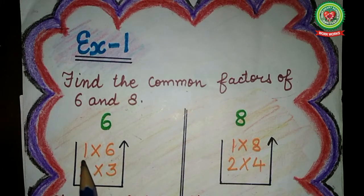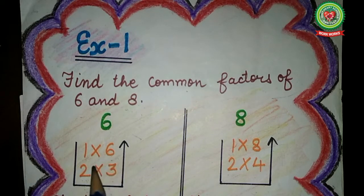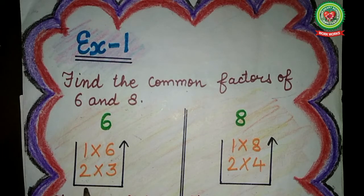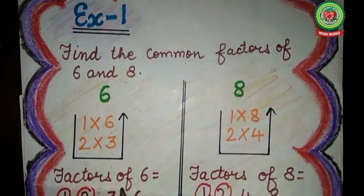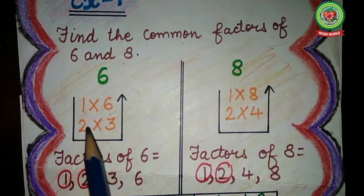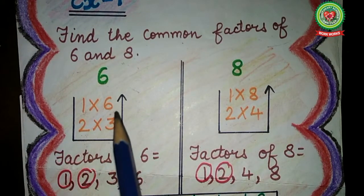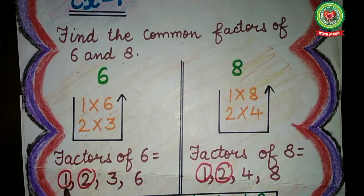For finding the factors of 6, I will start with table of 1. On 1 table, 6 comes on 6 — 1 six is 6. After 1 table, turn to 2 table. On 2 table, 6 comes on 3 — so I will write 2 multiply by 3. After 2 table, turn to 3 table. On 3 table, 6 comes on 2 — 3 twos are 6 — but you can see I have already written 3 multiply by 2, so repetition is there. Whenever repetition occurs, we will make a U sign. So factors of 6 are 1, 2, 3, and 6.